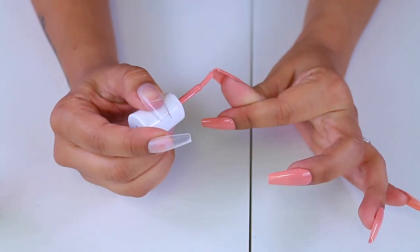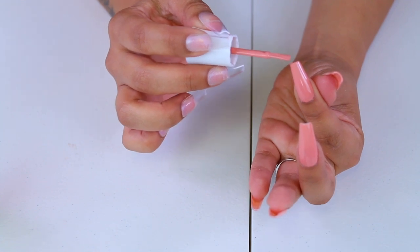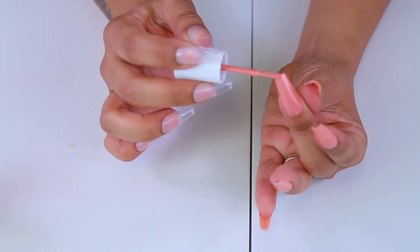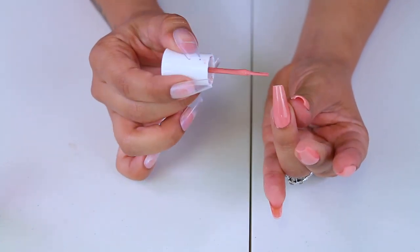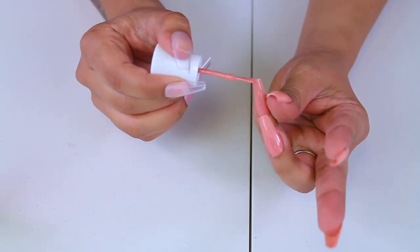And you also want to make sure that you paint the tip of the nail because sometimes you'll just see, especially once you cut it, you'll see that it has a white mark or a transparent mark. So make sure that you do that because it just looks so much better.